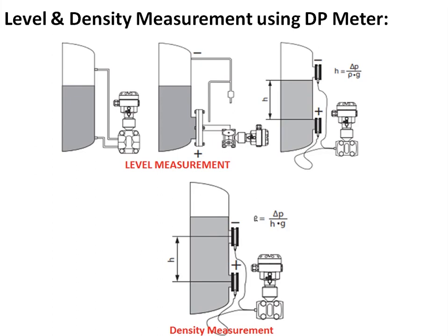For level and density measurement using a DP transmitter: the level measurement is done using a DP transmitter. The pressure exerted by the liquid level is proportional to rho × G × H. The height of the liquid is measured by measuring the differential pressure, given as H = delta P / (rho × G).